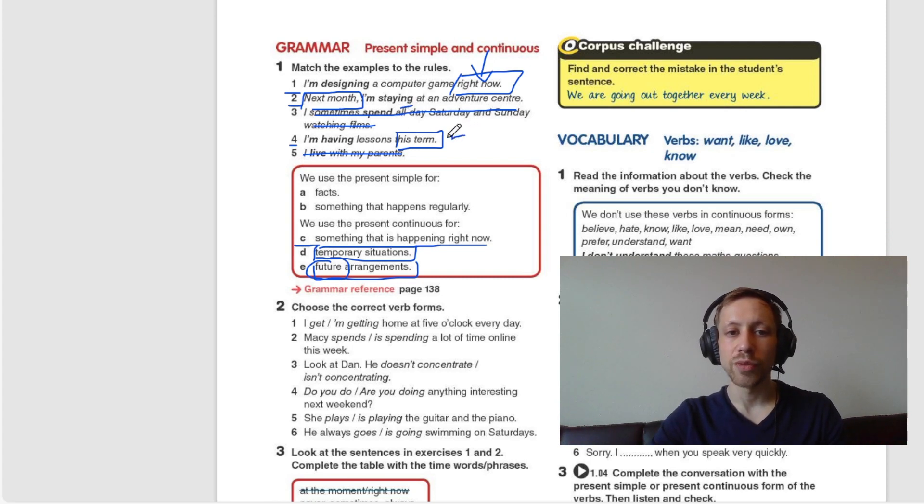This is Present Continuous for temporary terms. For example, I'm playing basketball this summer. I'm having lessons this term. And for the first one, something happening now. I'm designing a computer right now. I'm talking to you right now.